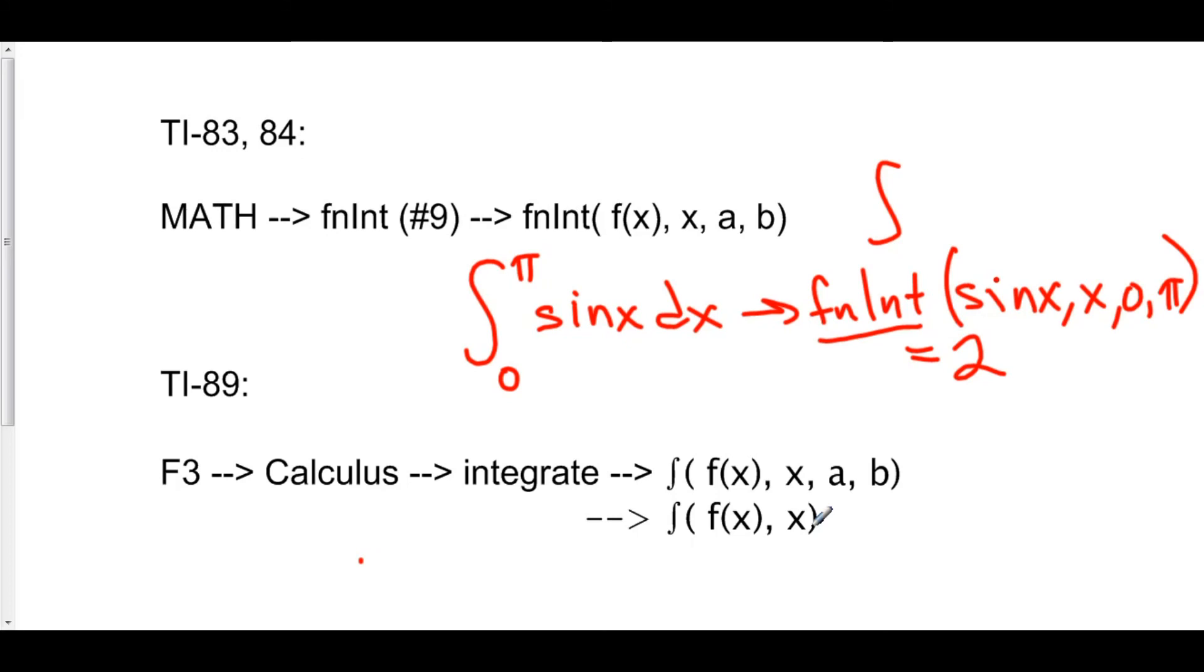So for example, on the TI-89, if you typed in integral sine x, comma, x, what it's going to give you is negative cosine x rather than an actual number.